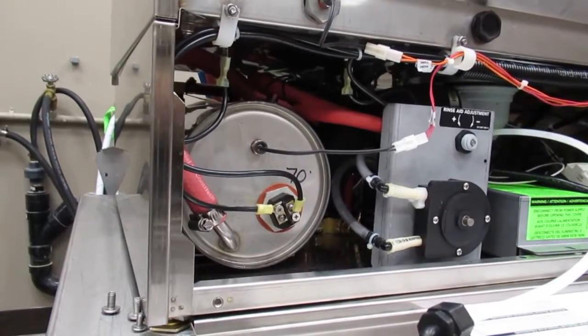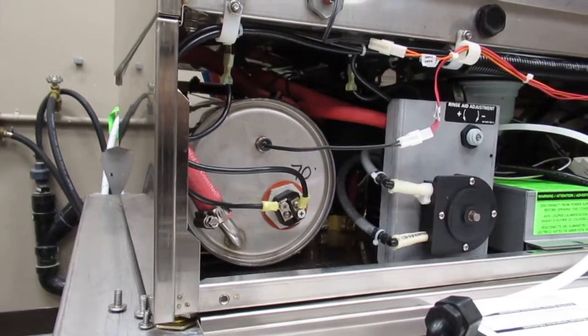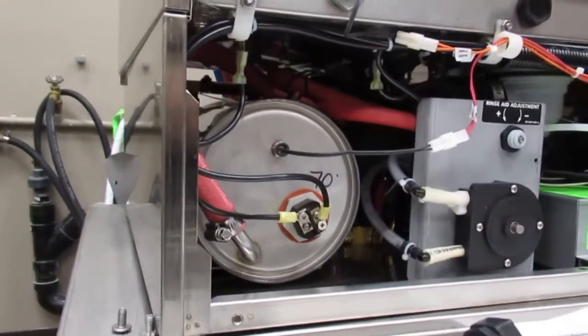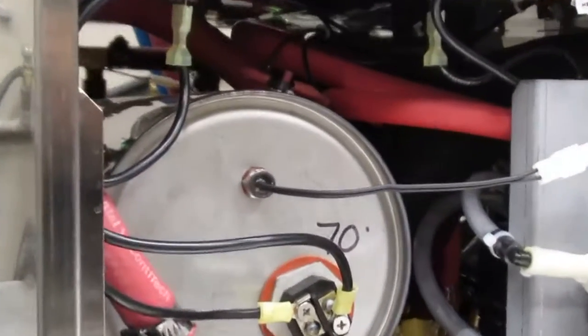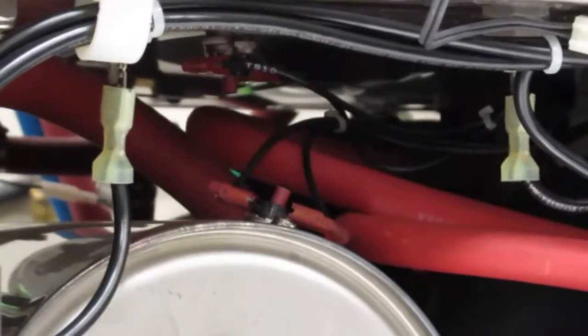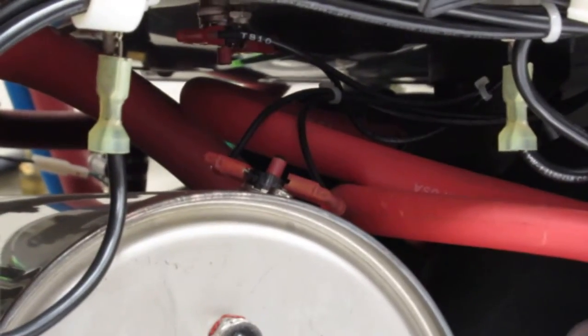Today we're going to show you how to reset a high limit on a Moyer Diebel under counter machine. The machine we're looking at right now is a 383HT model. First thing you want to do is cut power to the machine, turn the breaker off at the breaker panel.